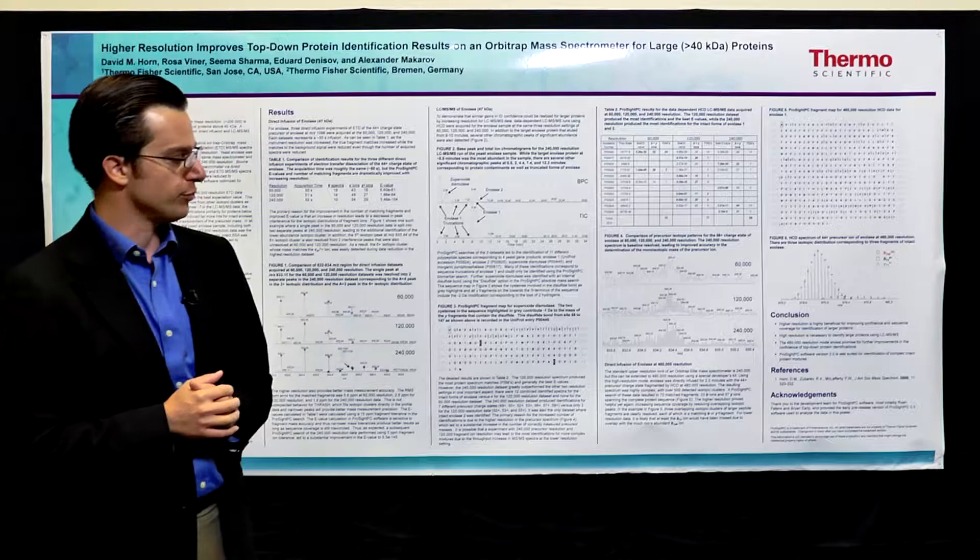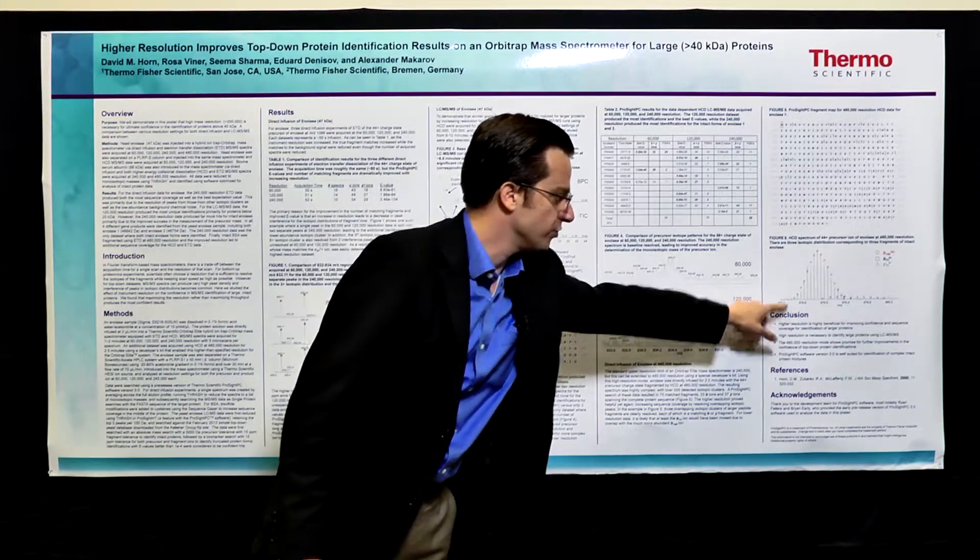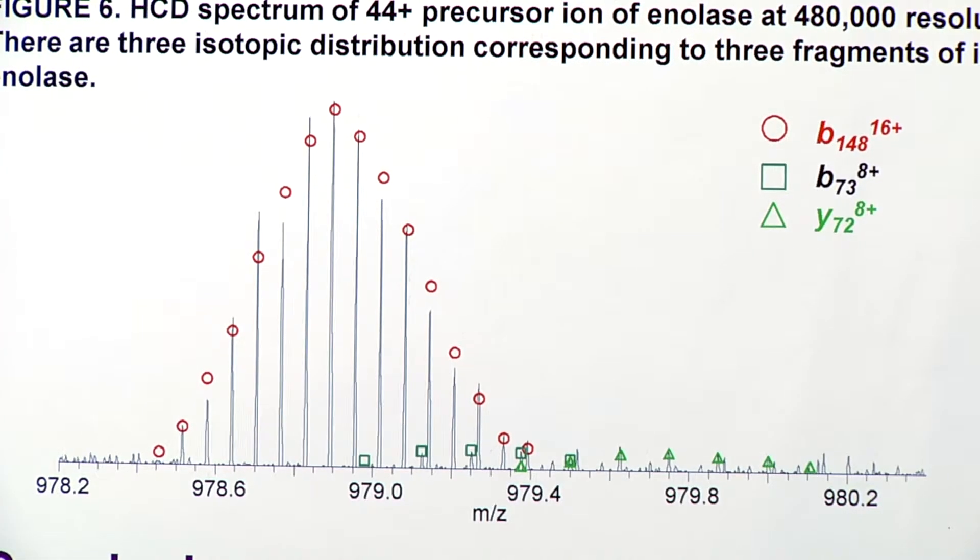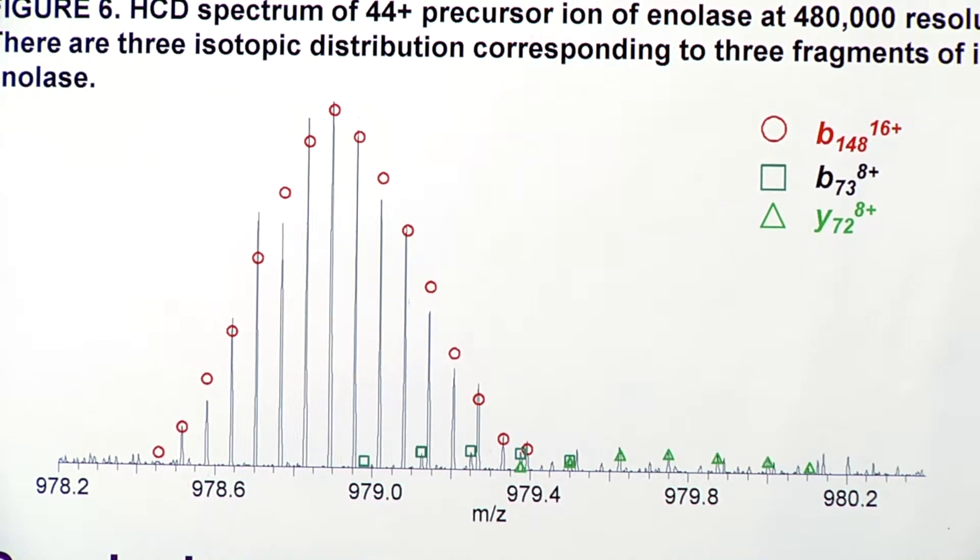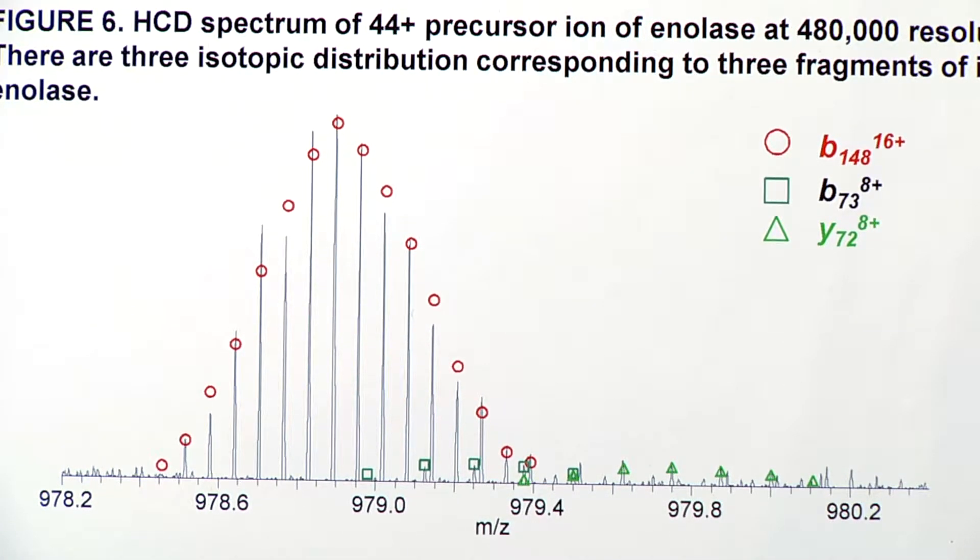And yet again, we saw an example where peptide fragments over here were identified at 480,000 that we wouldn't have been able to otherwise.